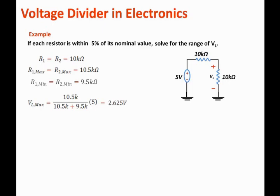...that the load resistance can be as large as 2.625 volts. To find the minimum voltage at the load due to the tolerance and the resistor values, we can say that this condition occurs when the load resistance is minimum and the internal resistance is maximum.